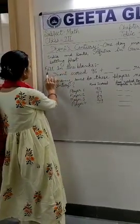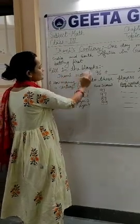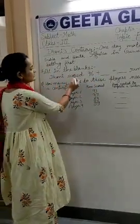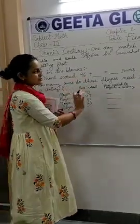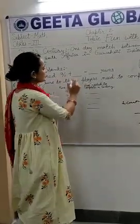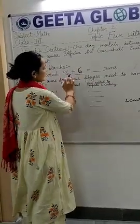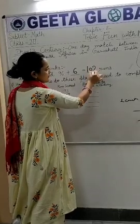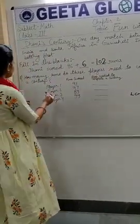So let's do the fill-in-the-blanks portion. हमें blanks में fill करना है: Dhoni scored 96. एक ball बची थी, एक ball में उसने six लगाया, तो plus six. 96 plus six is equal to one hundred two. ठीक है?